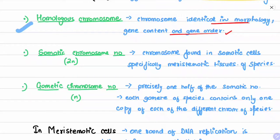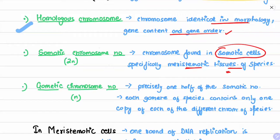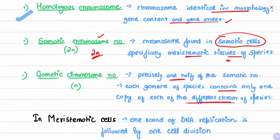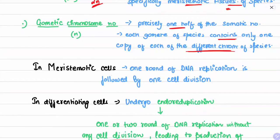The somatic chromosome number refers to chromosomes found in somatic cells, specifically the meristematic tissues of a species — this is the 2n number. The gametic chromosome number refers to chromosomes found in gametes; it is n, or one half, and each gamete contains only one copy of each different chromosome of the species.